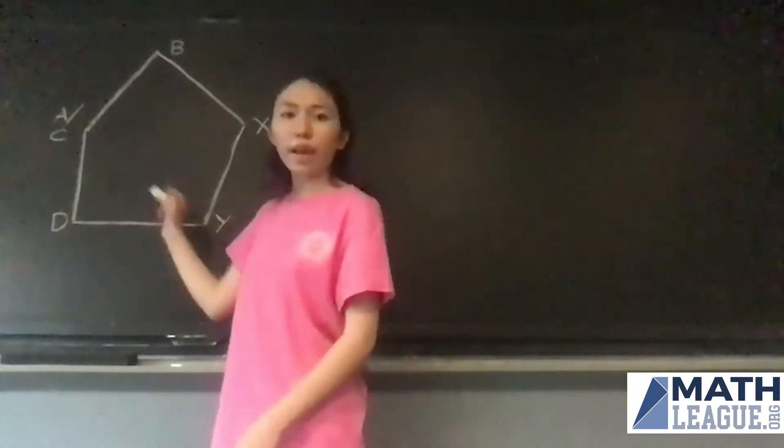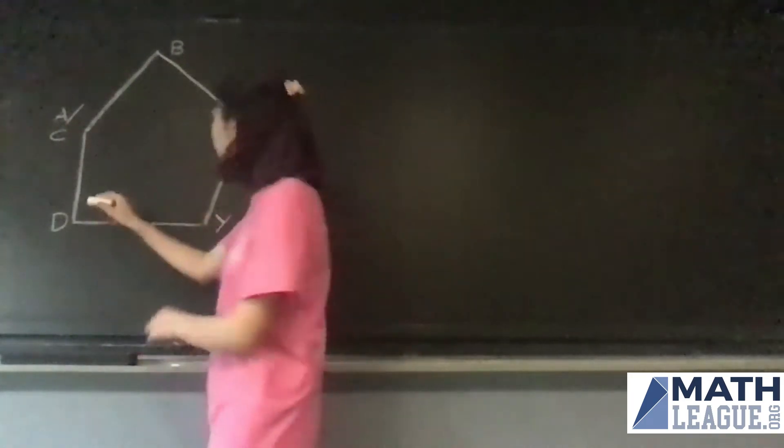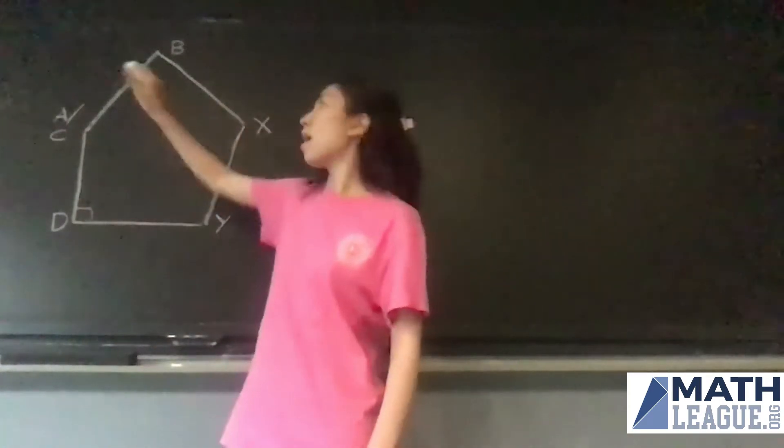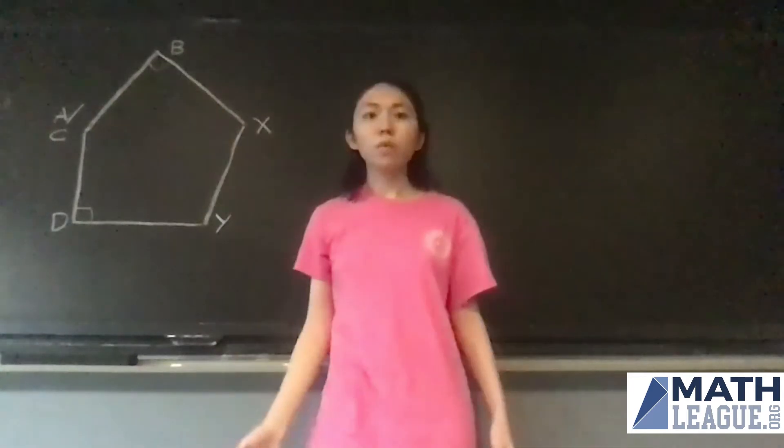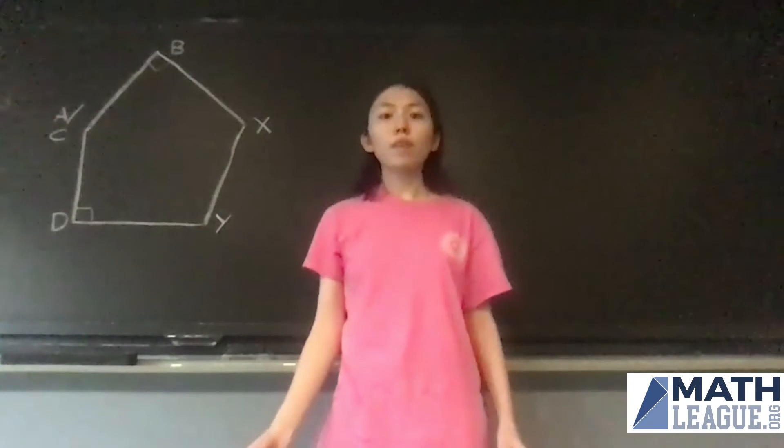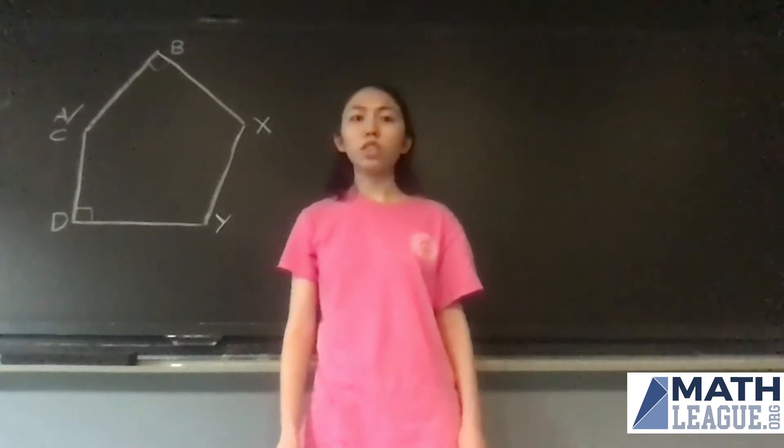So we have a right angle at Y, D, A slash C, and we have another one at angle B as well. So we can use the Pythagorean theorem perhaps when we see right triangles. However, we're going to need to know some lengths in order to do that.